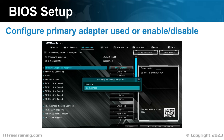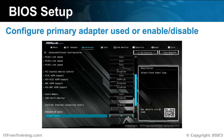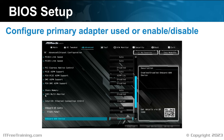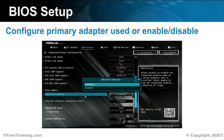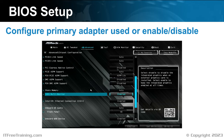I will now scroll down through the settings. You will notice a setting called iGPU multi-monitor. Notice that this setting is set to disabled. When this setting is disabled, the integrated video will be disabled when a video card is detected. If you want to use multiple monitors — one monitor running the integrated video card and the other using the installed video card — you will need to enable this setting. Since I want to use multiple monitors, I will enable this setting. Once enabled, I will save the settings and exit setup.